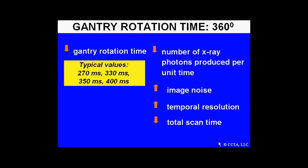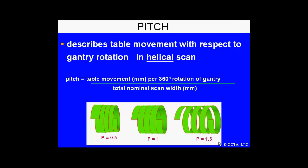The gantry rotation time can also be somewhat varied. Typical values range from 270, 330, 350, up to 400 milliseconds. Decreasing the gantry rotation time decreases the number of x-ray photons produced per unit time and increases image noise, but it also has the advantage of improving temporal resolution and decreasing total scan time.